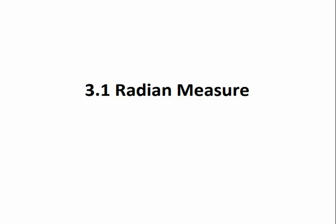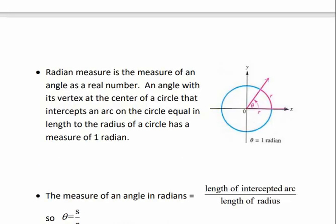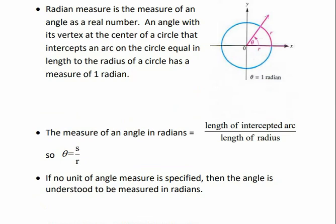This is section 3.1, radian measure. A radian measure is the measure of an angle as a real number. An angle with its vertex at the center of a circle that intercepts an arc on the circle equal in length to the radius of the circle has a measure of one radian. So when we have an intercepted arc — here's the arc — when that length is the same as the length of the radius of the circle, then that's considered to be one radian. So the measure of an angle in radians is equal to the length of the intercepted arc divided by the length of the radius.